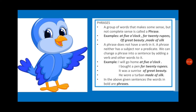Let us turn these phrases into sentences. The first phrase is 'at five o'clock'. If we add a few words, it becomes: 'I will go home at five o'clock.' Now this is a complete sentence because it conveys a complete idea. Second: 'for 20 rupees' was an incomplete phrase, but when we add words — 'I bought a pen for 20 rupees' — it becomes a complete sentence.